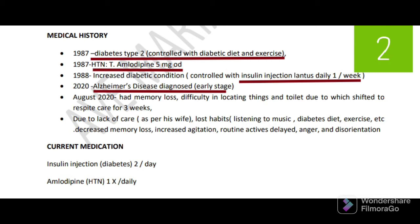We will move to the medical history. They have given several disease conditions: diabetes type 2 since 1987, hypertension since 1987 and on amlodipine 5mg OD. Patient is on insulin Lantus daily. From 2020, patient has Alzheimer's disease, and because of that he now has memory loss and difficulty in locating things and toilet, due to which he was shifted to respite care for 3 weeks.